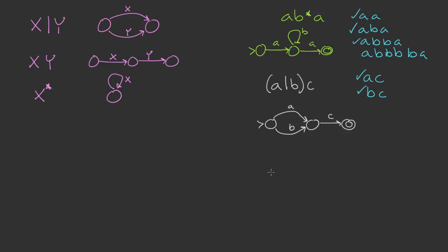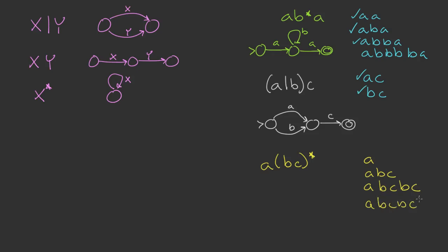Let's do a third example with the regular expression A(BC)*. This means A followed by zero or more pairs of BC. Some example strings would be: A by itself (zero pairs), ABC (one pair), ABCBC (two pairs), ABCBCBC (three pairs), and so on — it can repeat infinitely.